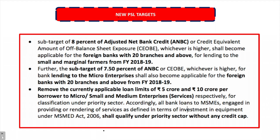First, let's look at the new priority sector lending targets. The first revision: a sub-target of 8% of adjusted net bank credit to be provided to small and marginal farmers will now become applicable to foreign banks with 20 branches and above from financial year 2018-19.